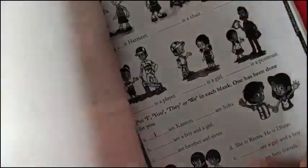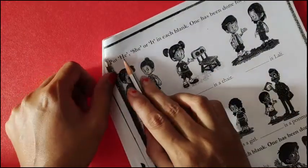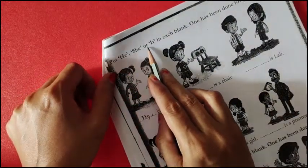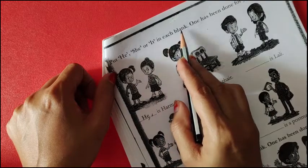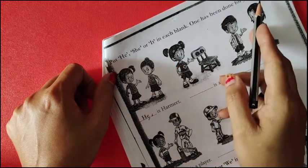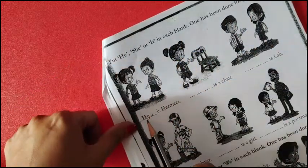Now, turn your page. Again, put he, she or it in each blank. One has been done for you.